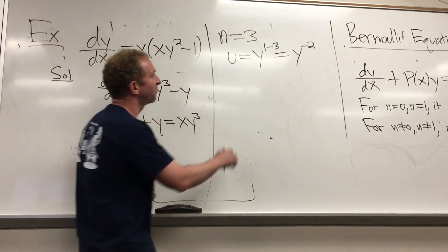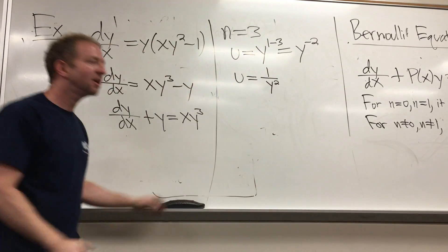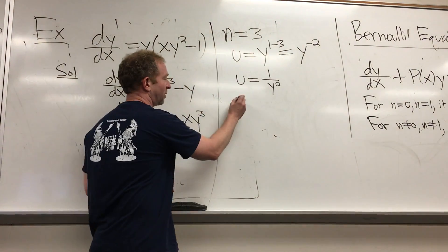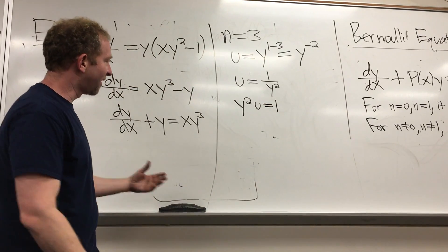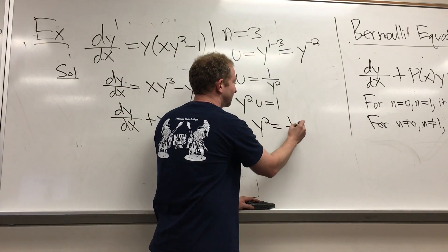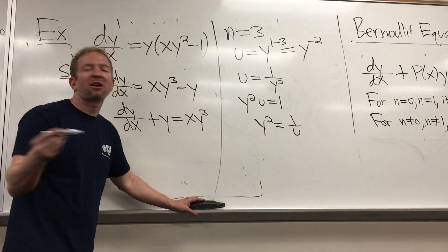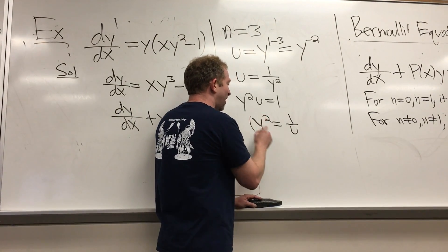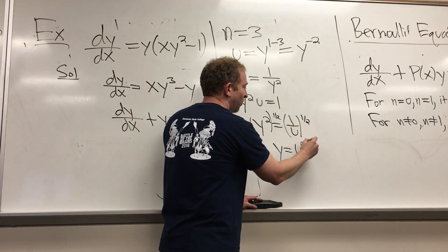And then we have to solve for y. So write this as 1 over y squared. Then we simply multiply both sides by y squared, so we get y²·u = 1. Divide by u and take the square root of both sides. When you take the square root you get a plus or minus — it doesn't matter which one you use, we'll just use the plus. So raise it to the 1/2 power: y = u^(-1/2).